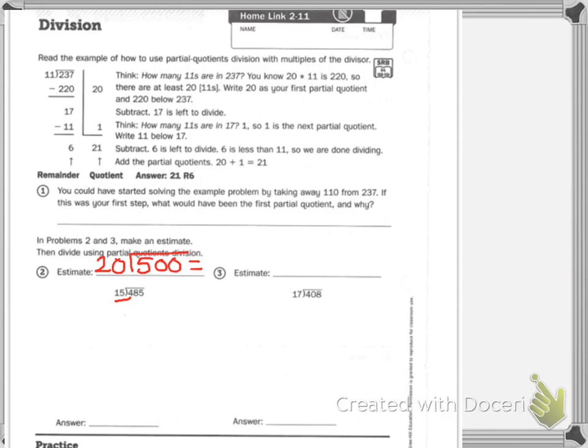So, 20 times 20 is 400. And I have 100 left over. So, this is going to be 25. I'm going to check my math real quick. Yep. So, 500 divided by 20 is 25. Let's see how well we did.